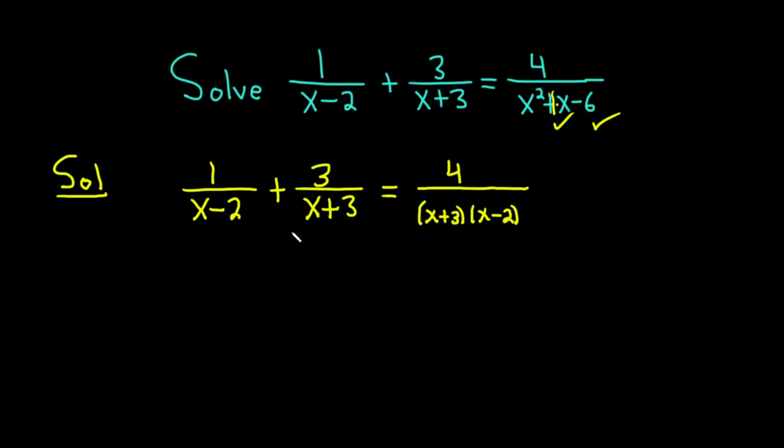But now to solve this equation we're looking for x. So all the x's are on the bottom. So it's a good idea to clear the fractions. We're going to multiply both sides by x plus 3 and x minus 2 because that's going to clear the fractions.